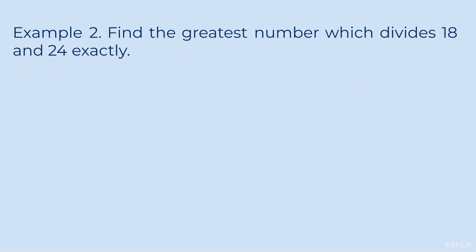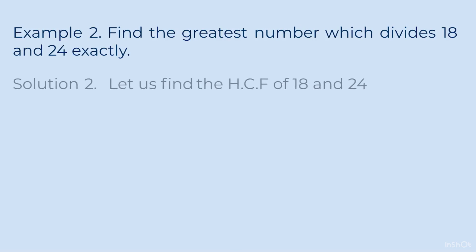Example 2. Find the greatest number which is divisible by 18 and 24 exactly. Here the word is 'greatest'. From greatest, you have to understand that greatest means highest — and that means Highest Common Factor.